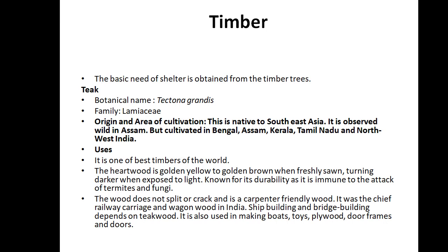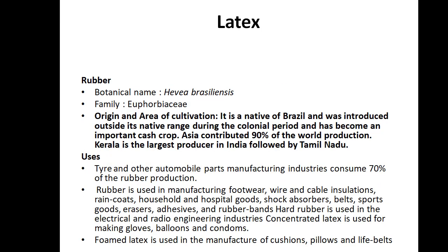Teak is also used for making boats, toys, plywood, cabinet work, door frames, doors, and windows. Next is latex. Latex is rubber. Its botanical name is Hevea brasiliensis. Kerala is the largest producer in India, followed by Tamil Nadu.